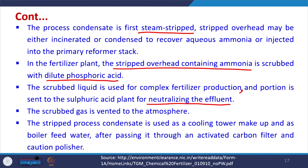In the fertilizer plant, the stripped overhead containing ammonia is further stripped with dilute phosphoric acid. The stripped liquid is used for complex fertilizer production and some portion is sent back to the sulphuric acid plant for neutralizing the effluent. The scrubbed gas is vented to the atmosphere. The stripped process condensate is used as cooling tower makeup and as boiler feed water after passing through an activated carbon filter.